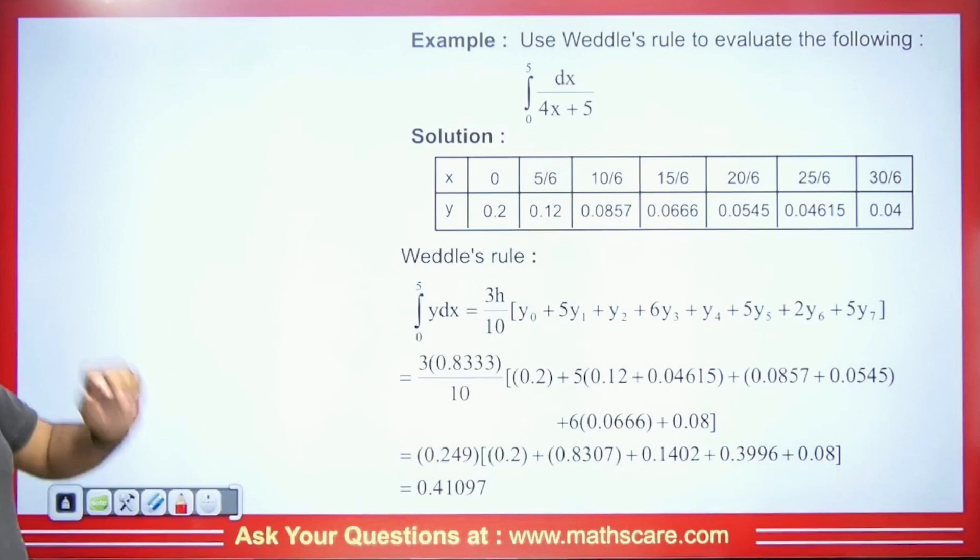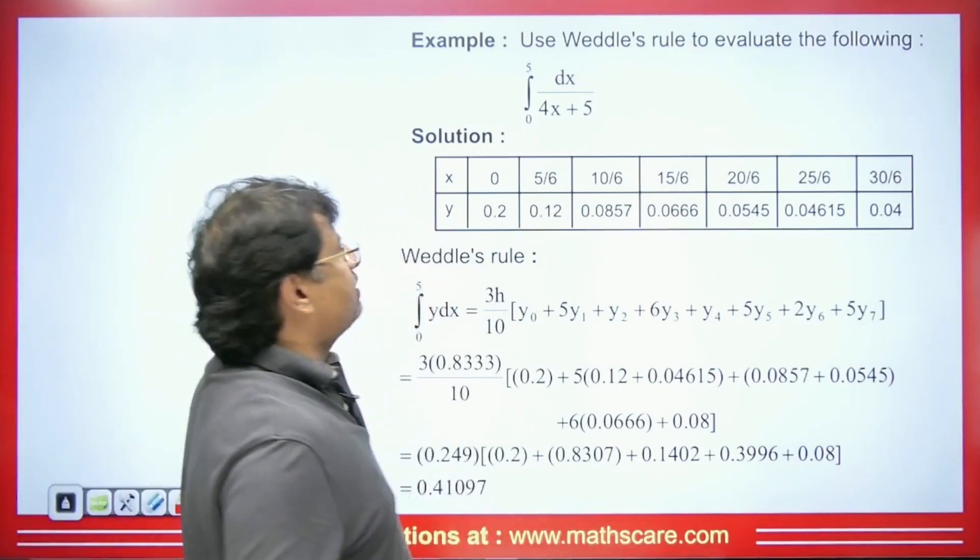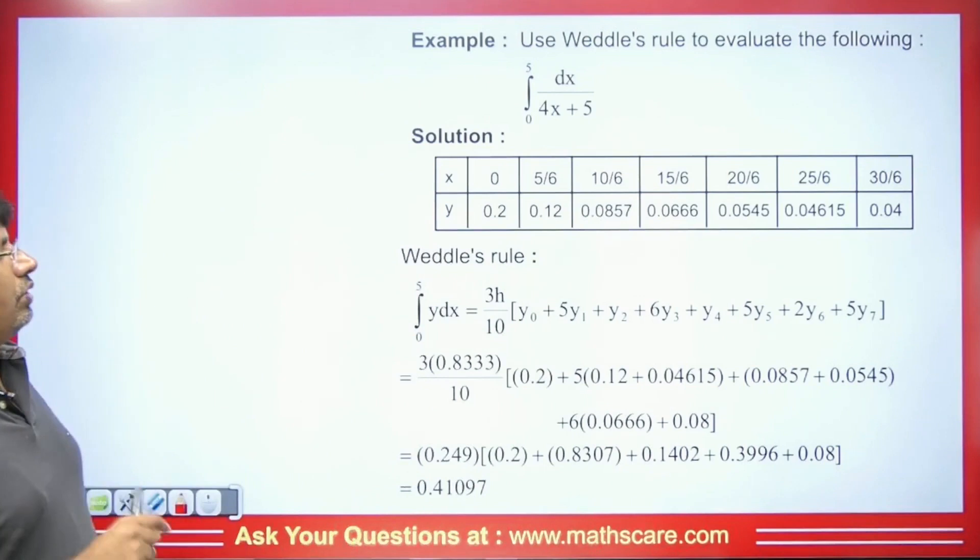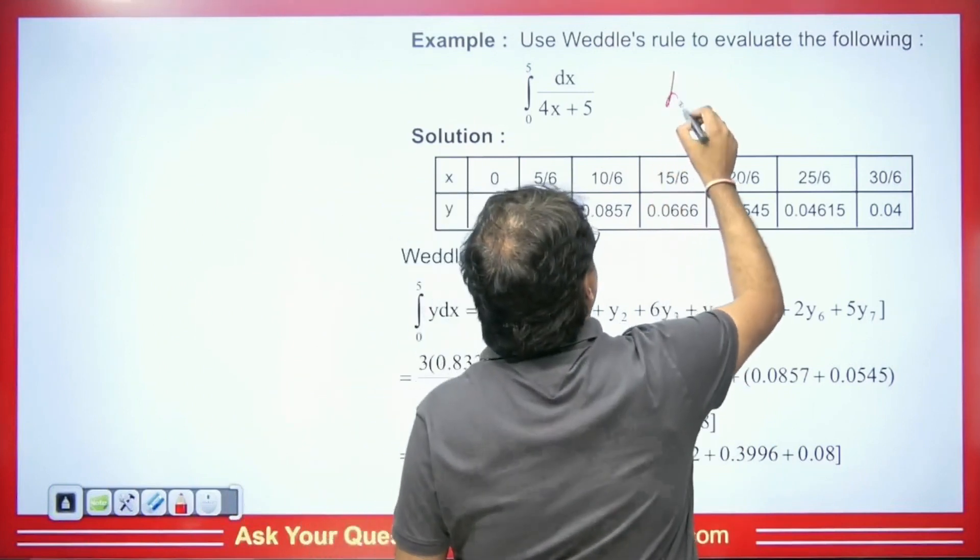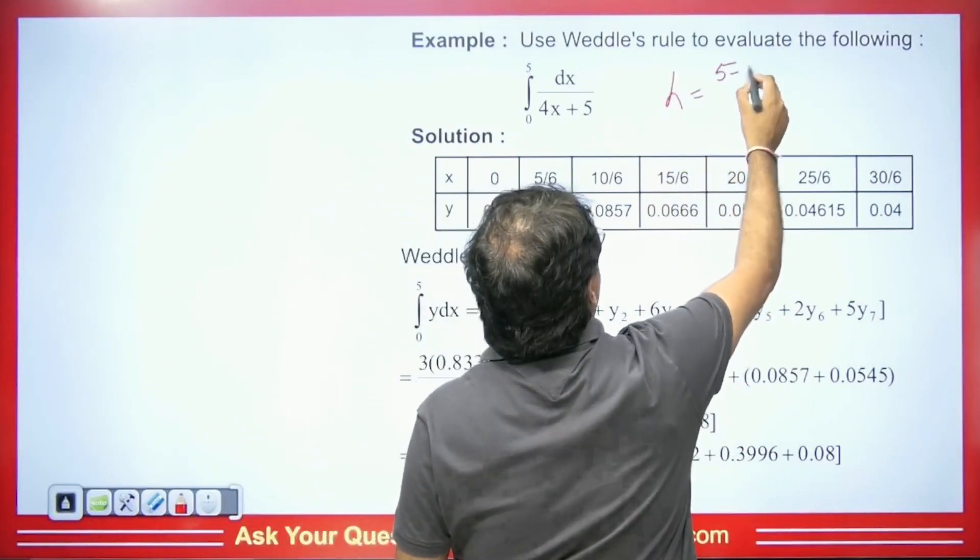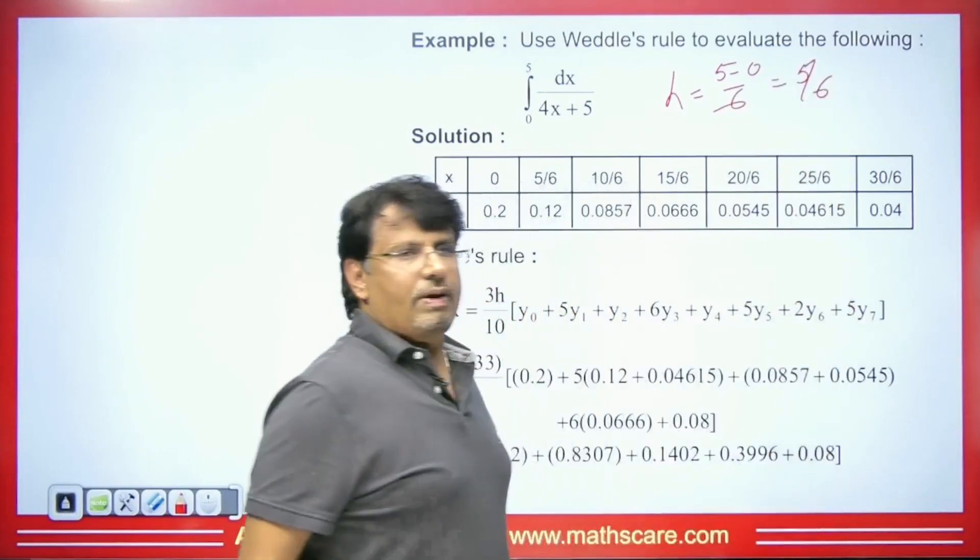The question says, use Weddle's rule to evaluate ∫dx/(4x+5), while the limit is given from 0 to 5. Now, what should we do here? When we have a question of this type, we divide this into six intervals. h is equal to the upper limit minus the lower limit divided by 6. So the h that we get will be 5/6.